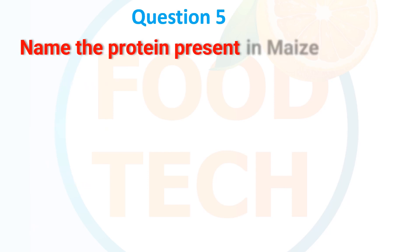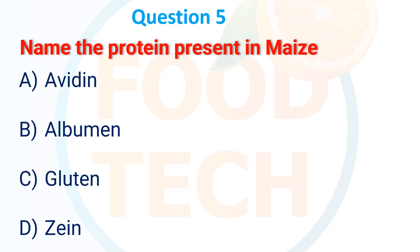Question 5: Name the protein present in egg. A. Avedine, B. Albumin, C. Butane, D. Genine. The answer is Zein.